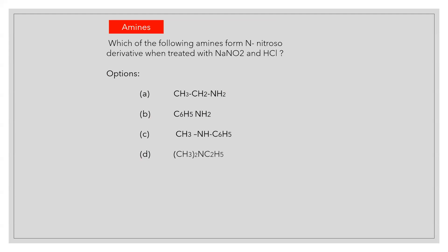Which of the following amines form N-nitroso derivative when treated with NaNO2 and HCl? Answer C: (CH3)2NH-C6H5.